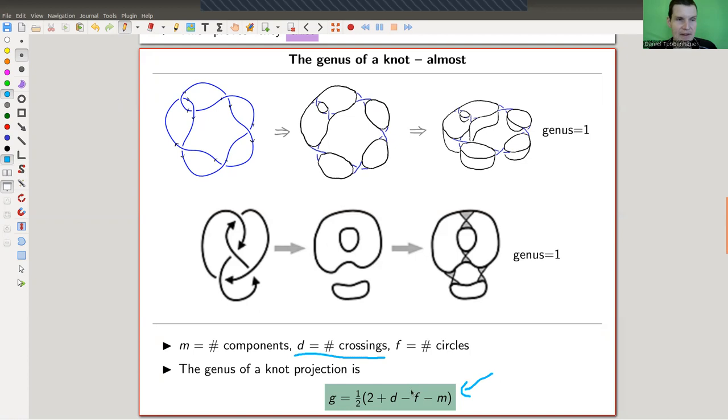So I have d number of crossings. For example, here I have one, two, three, four, so d equals four. I have f number of circles, one, two, three, f equals three, and m number of components, it's just a one component object here, so m equals one. And I just define the genus of a projection, very crucially, of this projection, the genus is whatever this number gives. So two plus four is six, minus three minus one is two, and you divide by two, so genus is one. And if I would be brave enough now to do the calculation for the other one, it should give genus one as well.